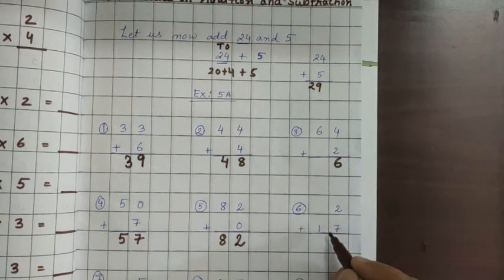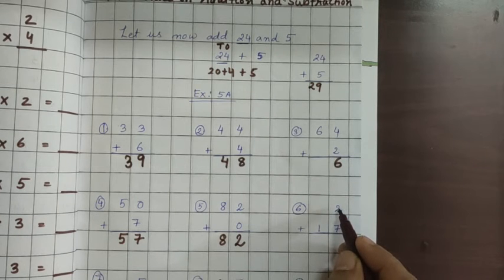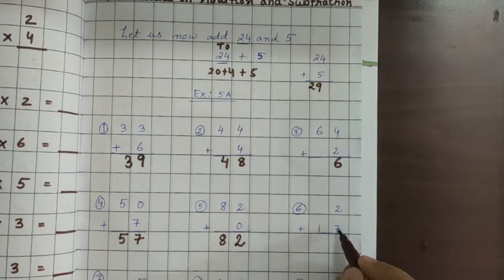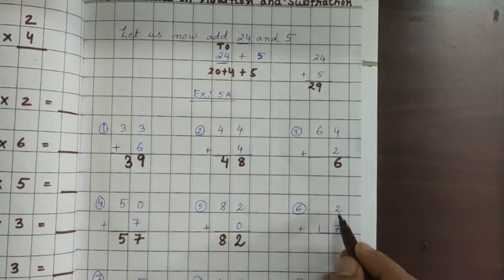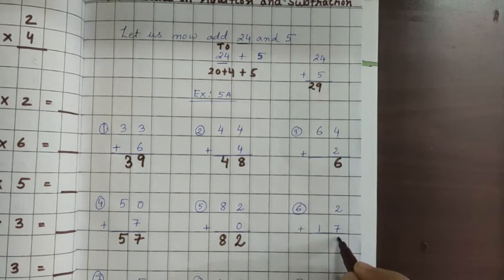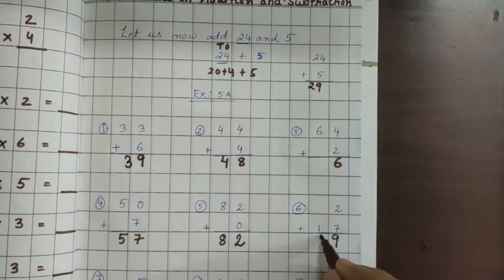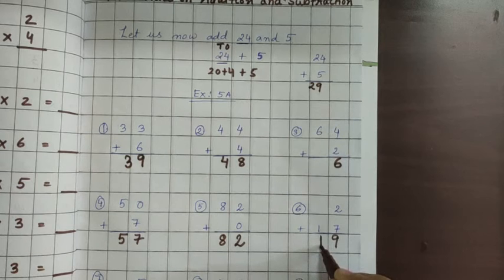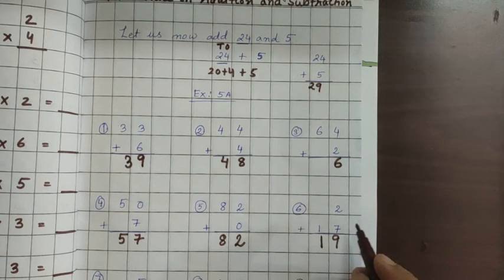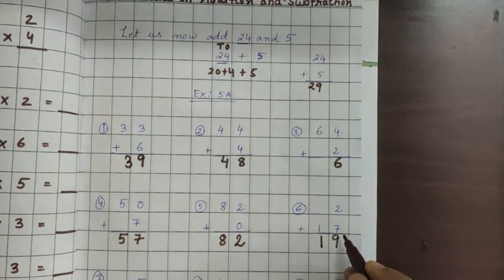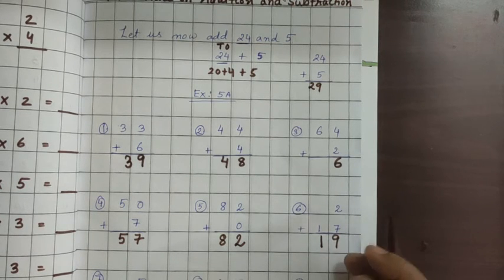Next one you see that here single digit upper side, down 2-digit is there. Same process. 7 plus 2, keep 7 in your mind and count 2 forward: 7, 8, 9. So 9 will come. 1 up, anything is there? Nothing is there. So directly 1 will come down. So this way you have to do the 2 bigger digit and 1 single digit addition.